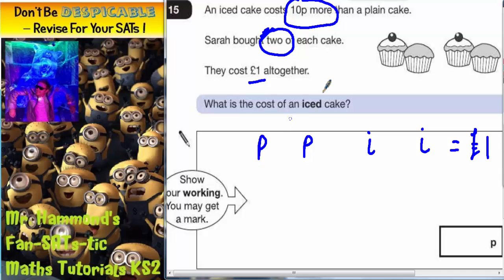The plain cakes, cheapest they could be would be 10p. So we could have 10 for that plain cake, 10 for that plain cake.